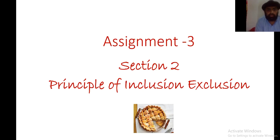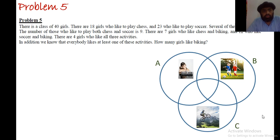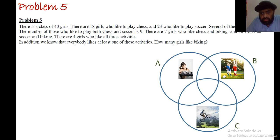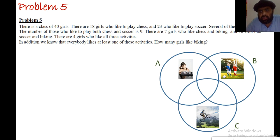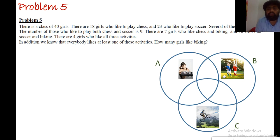Let's start with section 2 of the assignment — it's about the Principle of Inclusion-Exclusion. The first question: in a class of 40 girls, 18 like to play chess, 23 like soccer, and some like biking. Nine girls like chess and soccer, seven like chess and biking, some like biking and soccer, and there are four girls who like all three activities. The unknown is how many girls like biking.